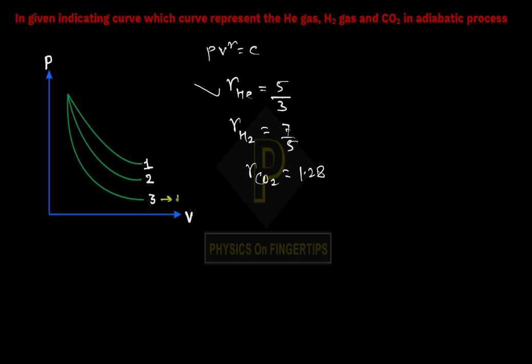So curve 3 is He, curve 2 is H₂, and curve 1 is CO₂ with 1.28. This question is posted on exam.